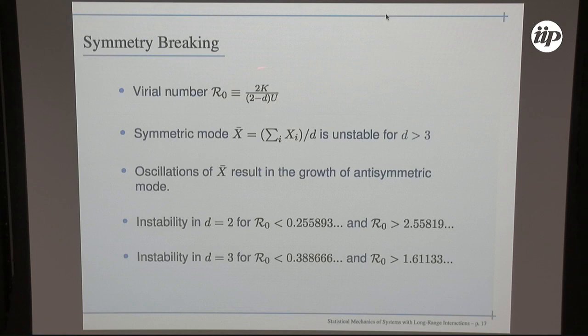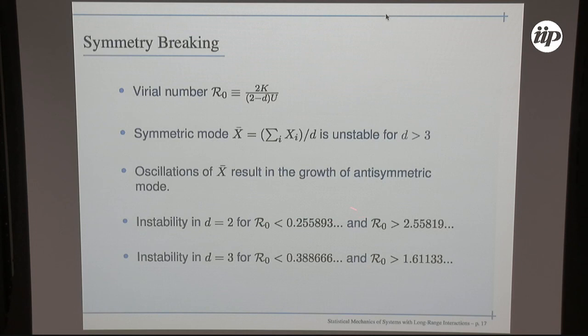There is a virial number, defined for different dimensions as the ratio of kinetic energy to potential energy, which governs everything for the gravitational system. There is a symmetric mode and an anti-symmetric mode; the symmetric mode drives oscillations of the anti-symmetric mode. Above a certain threshold virial number, we find two thresholds for the two-dimensional system and corresponding thresholds for three-dimensional systems, and these seem to agree reasonably well with simulations.